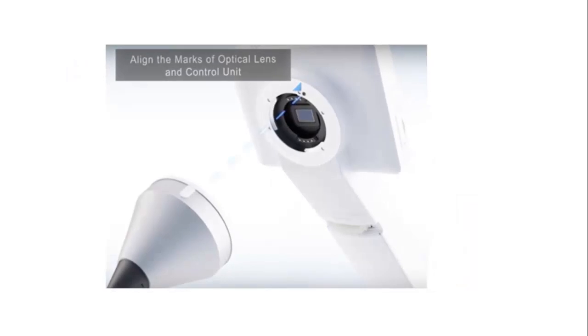To attach the lens, ensure power is off and the device has been removed from the charger. Find and match the lens alignment marks, small black circles, on both the Horus Scope and the lens. Insert the lens into the Horus Scope connector interface.